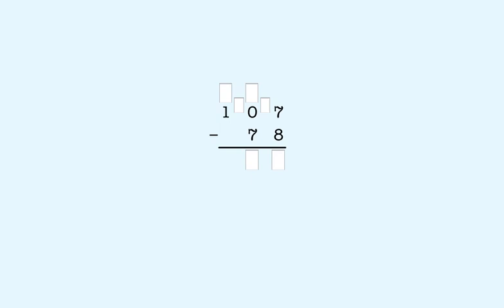We cross out the 1 to show that we took a 100. We don't need to put anything here because there are no hundreds left. We put a 1 here to show that we made 10 tens. Now we can take a 10 from the tens place to make 10 ones. We cross out the 10 by clicking on the 0 or the 1, and we put a 9 here to show we have 9 tens left.